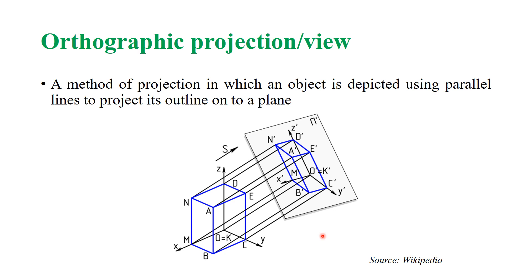To get the side view, we use side planes — either right side or left side. There are two common orthographic projections: first angle projection and third angle projection.